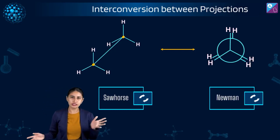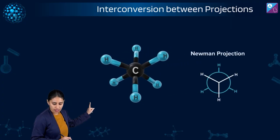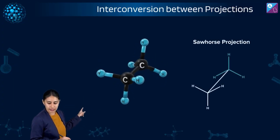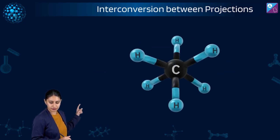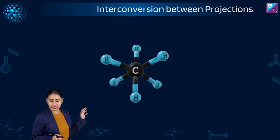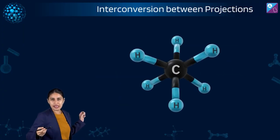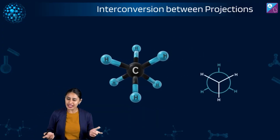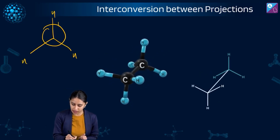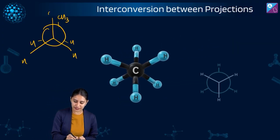Let me show the interconversion once again. This is the Newman projection of ethane, and this is the sawhorse. You can't see the second carbon in Newman — the point where the three hydrogens intersect is the front carbon, and the back circle is the second carbon. For propane, everything remains the same — just replace one hydrogen with a methyl CH3, making it three carbons. For butane, add one more CH3.